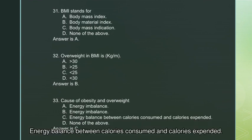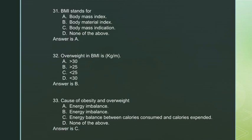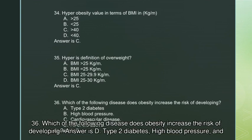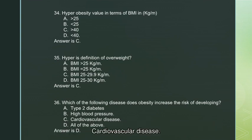Question 33: Cause of obesity and overweight — answer is C: energy imbalance between calories consumed and calories expended. Question 34: Hyper obesity value in terms of BMI is greater than 40 kilograms per meter squared — answer is C. Question 35: Overweight is defined as BMI 25 to 29.9 kilograms per meter squared — answer is C. Question 36: Diseases obesity increases the risk of — answer is D: type 2 diabetes, high blood pressure, and cardiovascular disease.